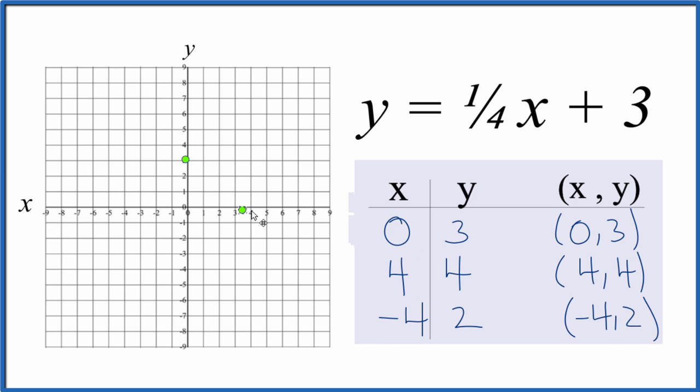Four for x, go over four, and y is four. So we go up four, and we could stop with two points, but I like to do three points. That means if we have a problem up here, we'll catch it.